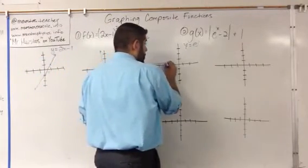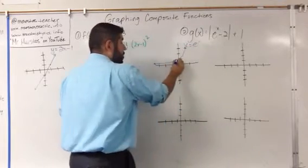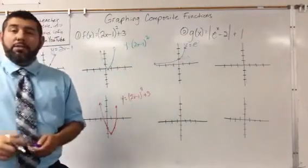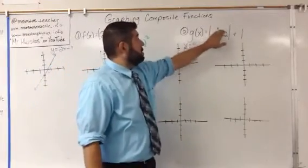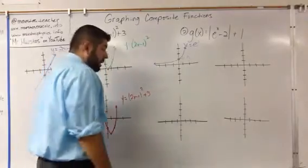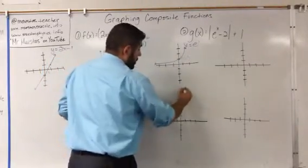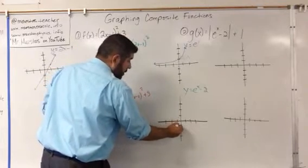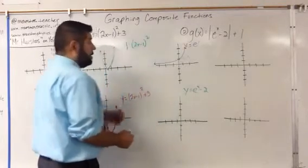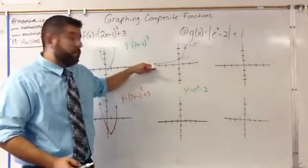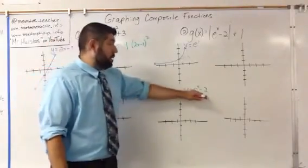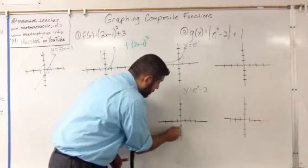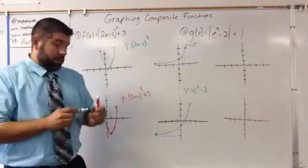This exponential graph crosses through (0, 1) — that's our y-intercept. Now we're going to translate that down 2 units because we have e to the x minus 2. The easiest thing to remember here is that we have a horizontal asymptote at y equals 0, so instead of being at y equals 0, our horizontal asymptote is now going to be at y equals negative 2. I'll draw a dotted line to signify that and draw our exponential.